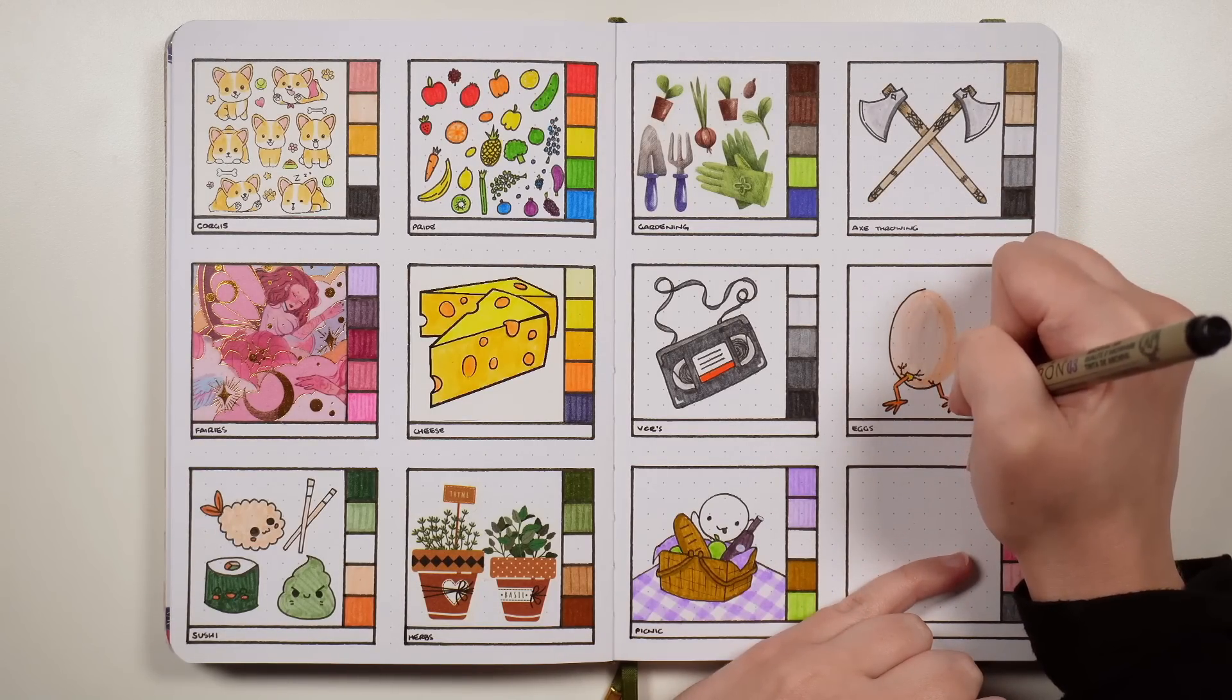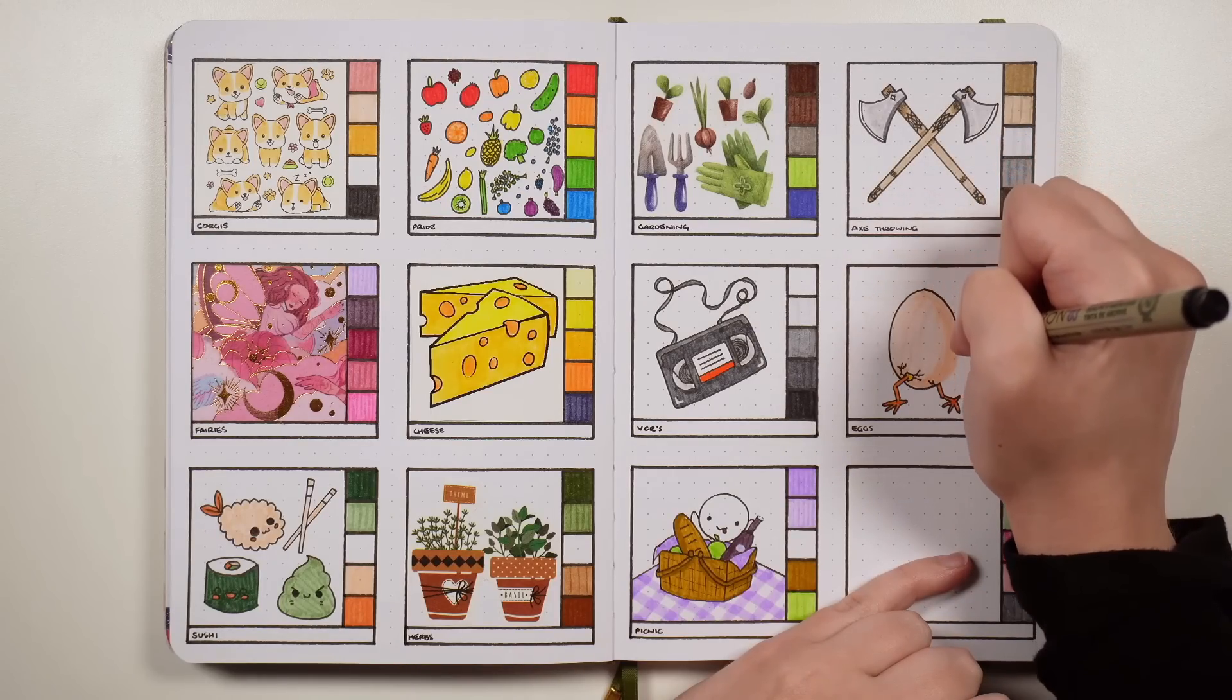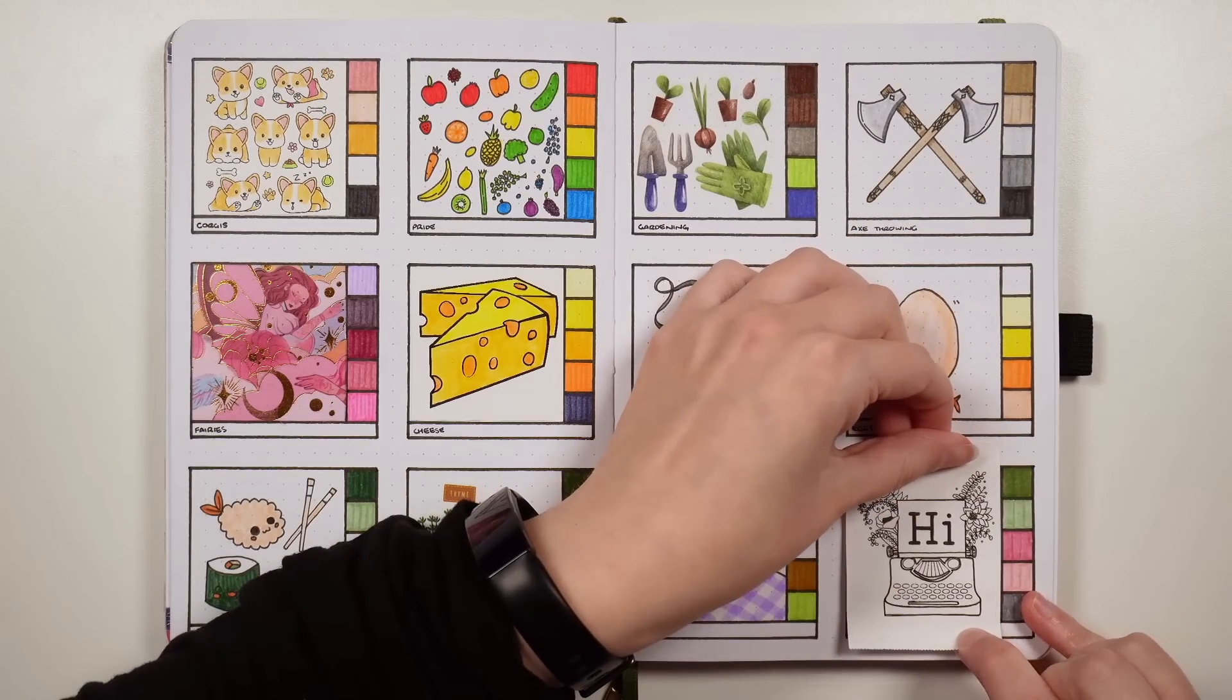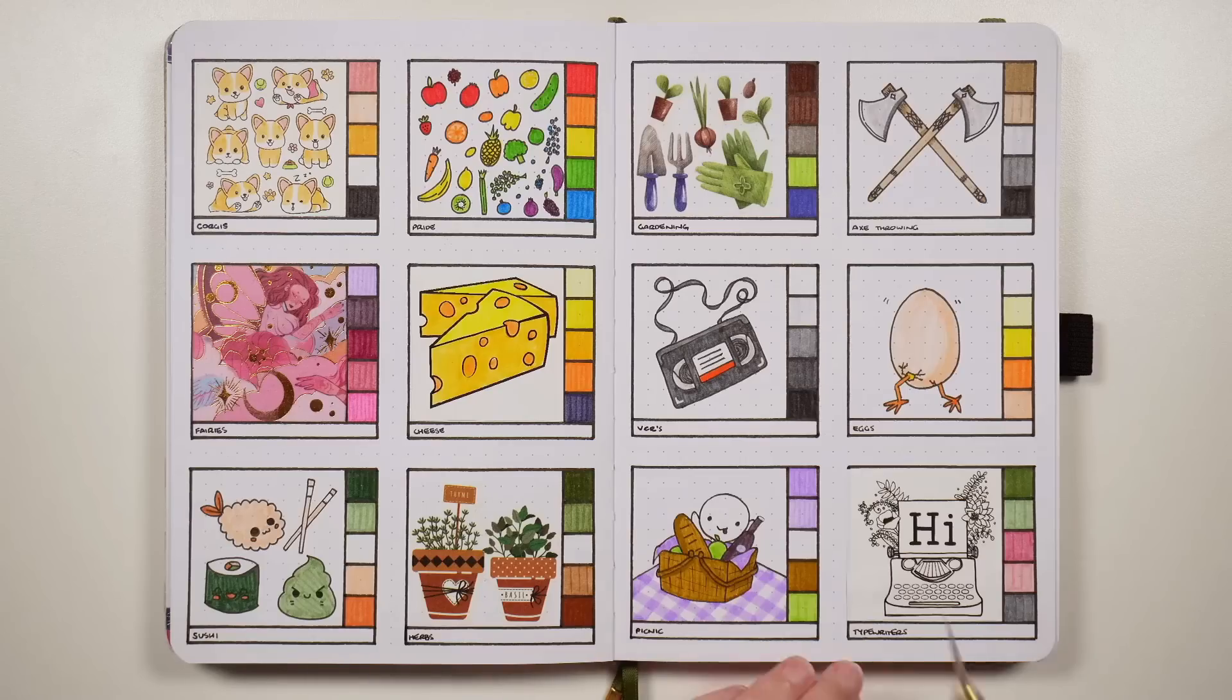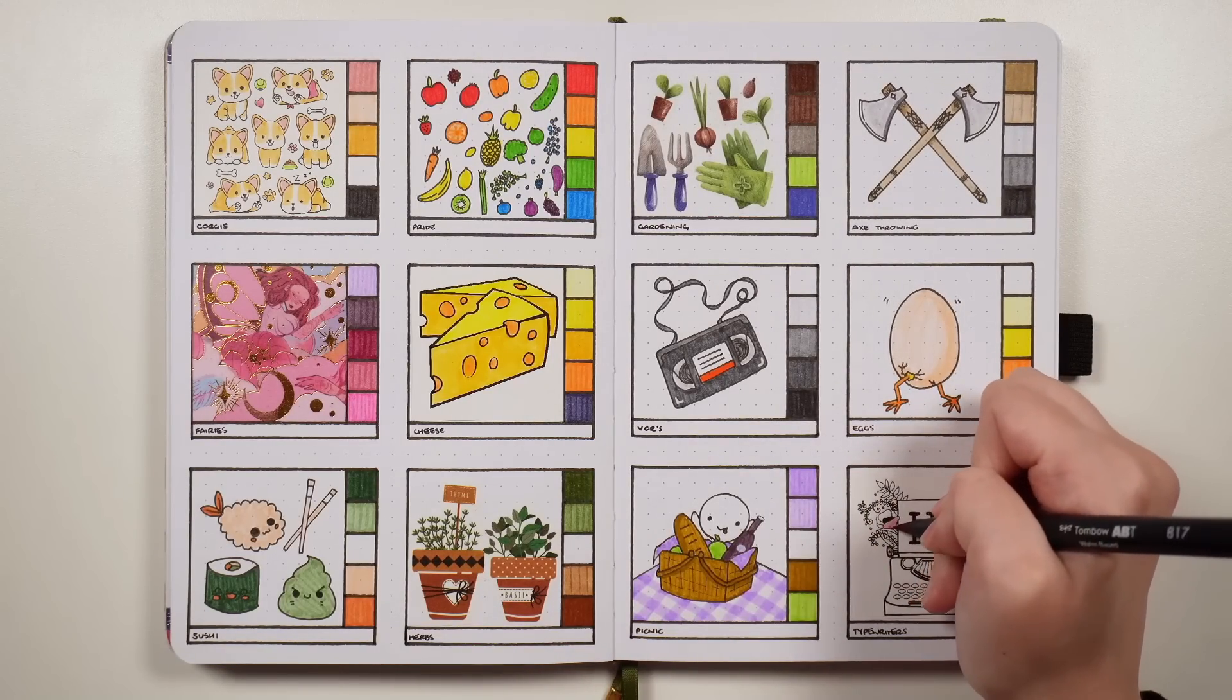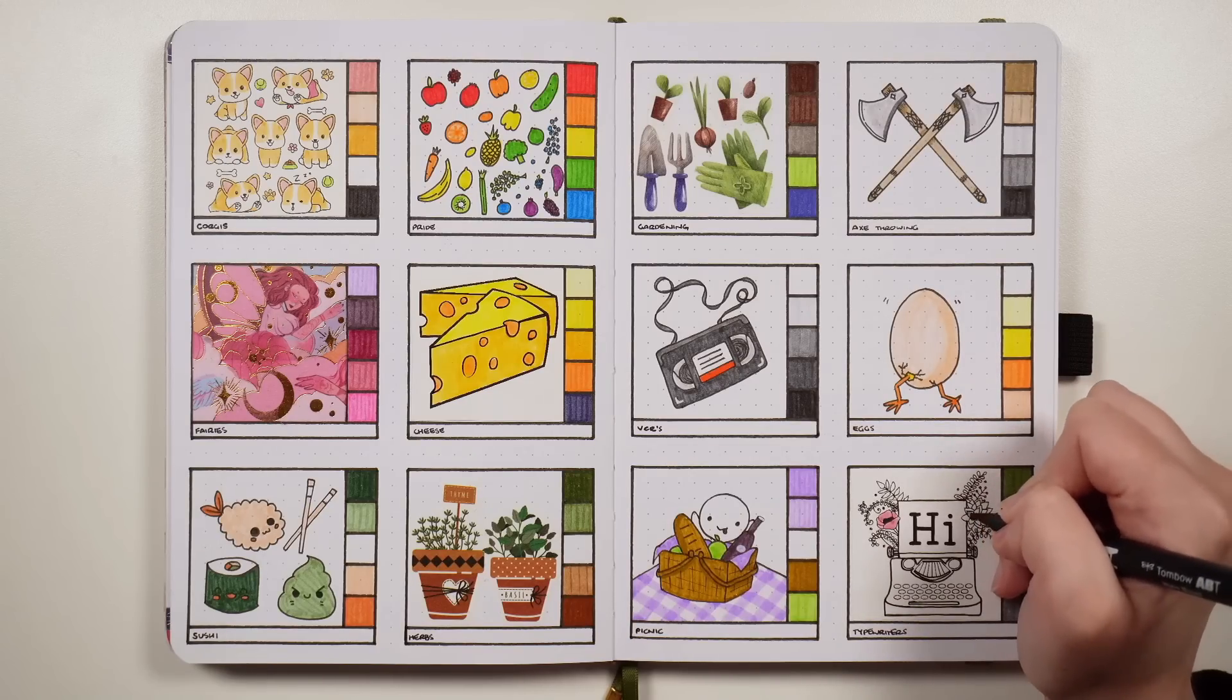While eggs are typically fairly simple to draw because they are just kind of an oval shape that's slightly wider at the bottom and slightly narrower at the top, something that's less user-friendly to draw is what our next theme idea is. And that is a typewriter theme. Now, although typewriters are more difficult to draw, you can find really good reference images online. And anytime someone's done a typewriter theme, I think it looks so beautiful.